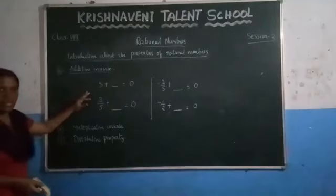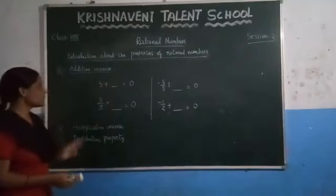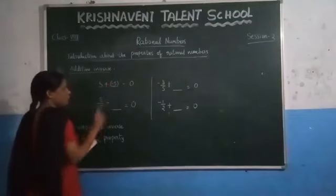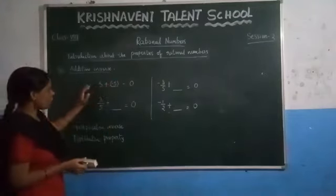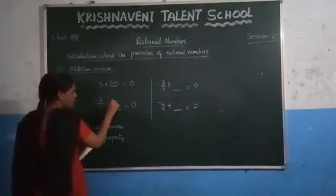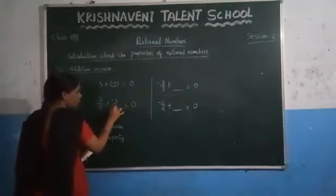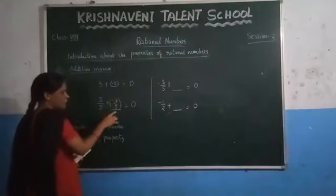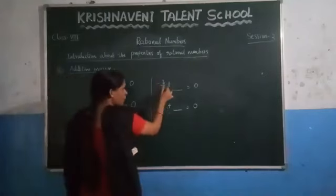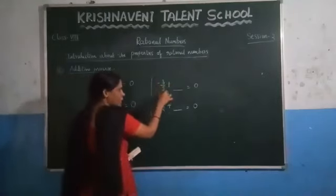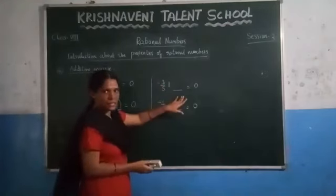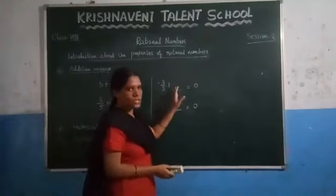Which number do you have to add to get the result as 0? You just have to take the negative of the given number — change the sign of the given number. So for plus 3 by 5, you add minus 3 by 5, and you get the result as 0. For minus 3 by 5, you have to add the positive number — you have to add plus 3 by 5 — so you are getting the result as 0.